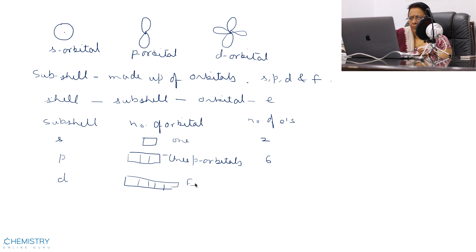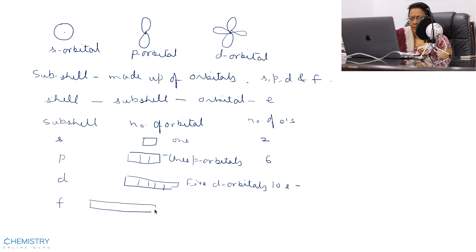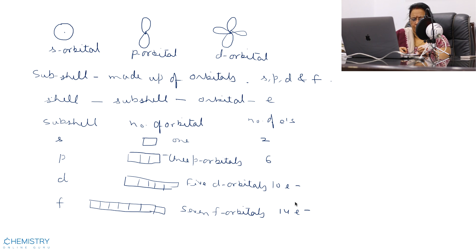The D subshell has 5 orbitals and 10 electrons. The F subshell has 7 orbitals, therefore 14 electrons.